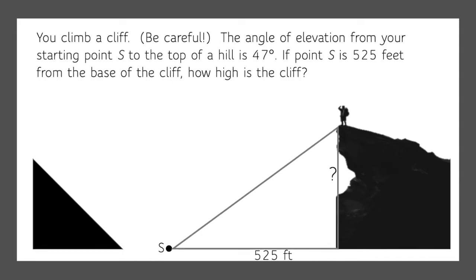Let's make this into a triangle. It says that the angle of elevation from your starting point S to the top of the hill is 47 degrees. This is where the trigonometry comes in - remember SOHCAHTOA. We're looking for the height of the cliff, which is opposite. We know the adjacent side, which is 525 feet, so opposite and adjacent - that's the tangent relationship.